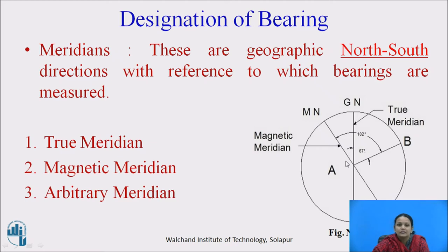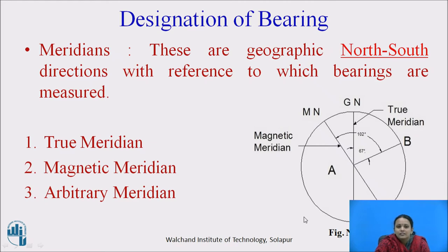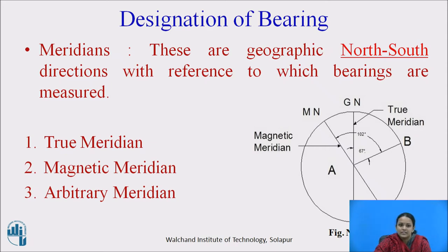The third type is arbitrary meridian. Arbitrary meridian is a fixed point which is referred for the survey of any project on the ground. You have to fix one permanent station point as the reference for the survey line.